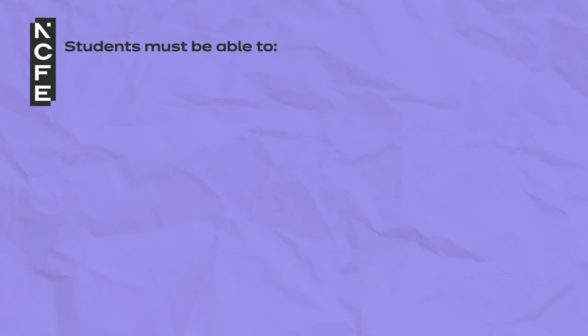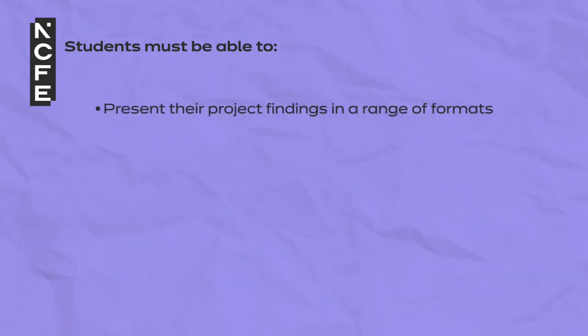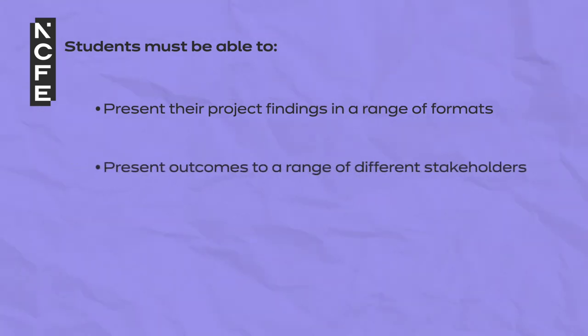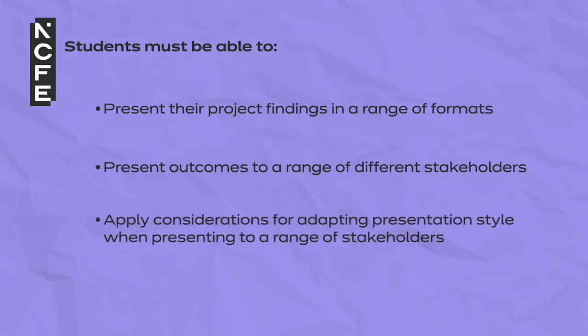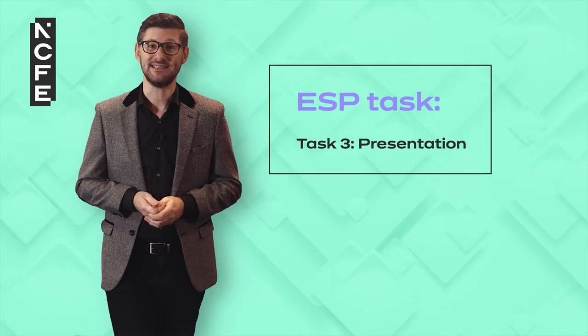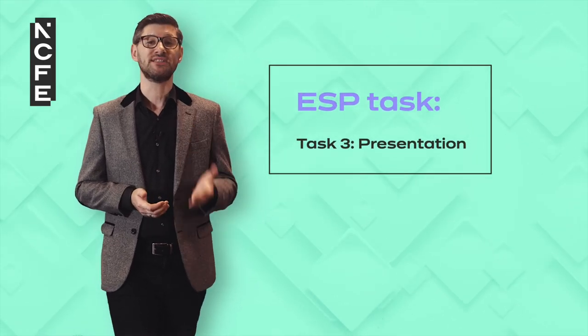Core skill 6 – Presenting. Students must be able to present their project findings in a range of formats, present outcomes to a range of different stakeholders, and apply considerations for adapting presentation style when presenting to a range of stakeholders. An example of an employer set project task where this core skill is assessed is the presentation.